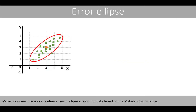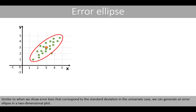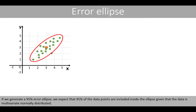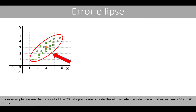We'll now see how we can define an error ellipse around our data based on the Mahalanobis distance. Similar to showing error bars that correspond to the standard deviation in a univariate case, we can generate an error ellipse in a two-dimensional plot. If we generate a 95% error ellipse, we expect that 95% of the data points are included inside the ellipse, given that the data is multivariate normally distributed. In our example, 1 out of 20 data points is outside this ellipse, which is what we would expect since 5% of 20 is 1.